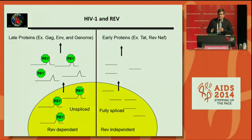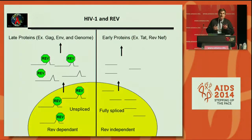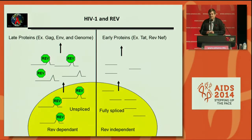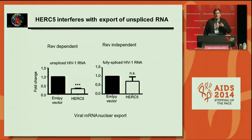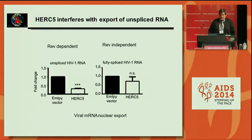HIV encodes an accessory protein called REV, which binds secondary structures of the HIV genome and causes it to be exported before splicing to produce late proteins such as GAG, envelope, or the HIV genome. Early proteins don't require this help — they are fully spliced and exported normally, producing early proteins such as TAT, NEF, and REV. We found that HERC5 significantly reduced the amount of unspliced REV-dependent RNA exported into the cytoplasm, but had no significant effect on fully spliced, REV-independent RNA, showing HERC5 interferes specifically with unspliced RNA export.